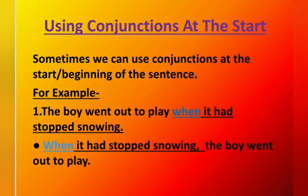Now, using conjunctions at the start. Do you know? Sometimes we can use conjunctions at the start or beginning of a sentence. For example, see this sentence: The boy went out to play when it had stopped snowing. In this sentence, you can see the highlighted word 'when', which is a conjunction. Now, observe the change. In the second sentence, we have started the sentence with the conjunction 'when', so it becomes: When it had stopped snowing, the boy went out to play.